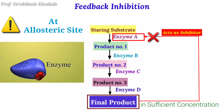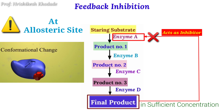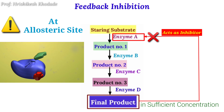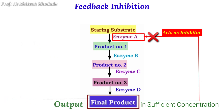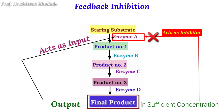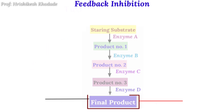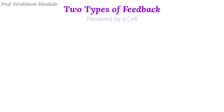Due to the binding of the final product to the first enzyme of the pathway, the active site of the first enzyme changes, which is why that first enzyme is no longer able to carry out its enzymatic action on the starting substrate. In other words, the output of the pathway acts as an input in order to stop the further reaction. Generally there are two types of feedbacks received by the cell.